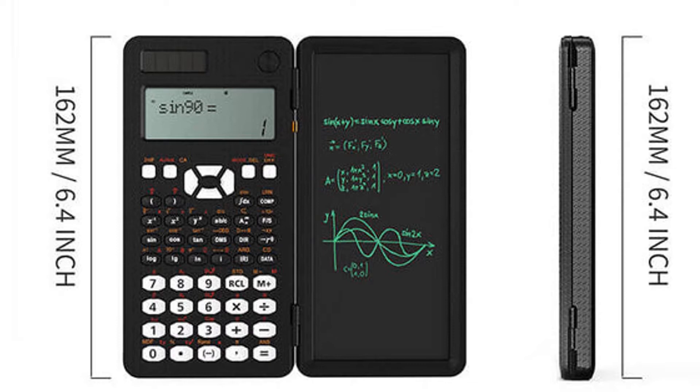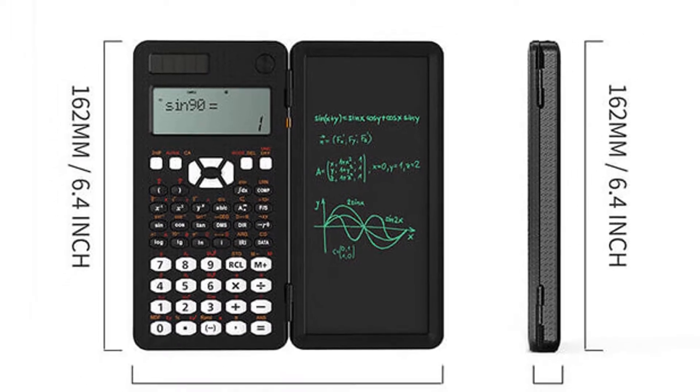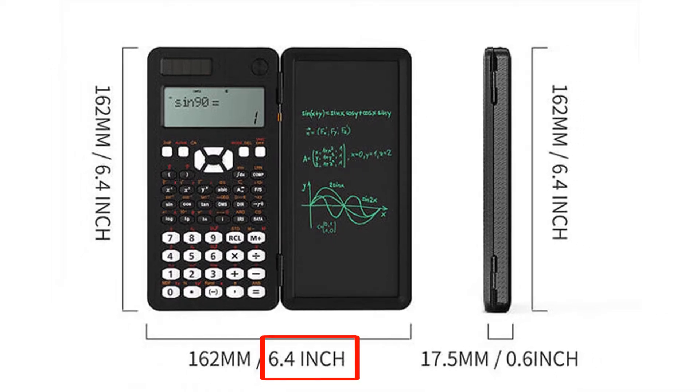The height of this calculator is around 6.4 inches, then if you unfold it the length is around 6.4 inches as well, then the weight is around 152.5 grams.